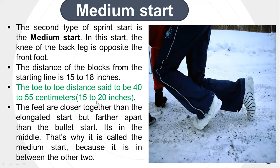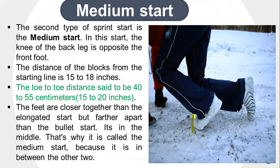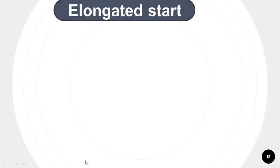Now I will talk on the medium start. Compared to bunch and bullet, the changes in medium start are: the frontal toe position — in medium start, the toe-to-toe distance is 15 to 18 inches or 40 to 55 centimeters. The feet are further apart than the bunch and bullet start but closer together than the elongated start — it is in the middle, that's why it is called medium start, because it is in between the two.